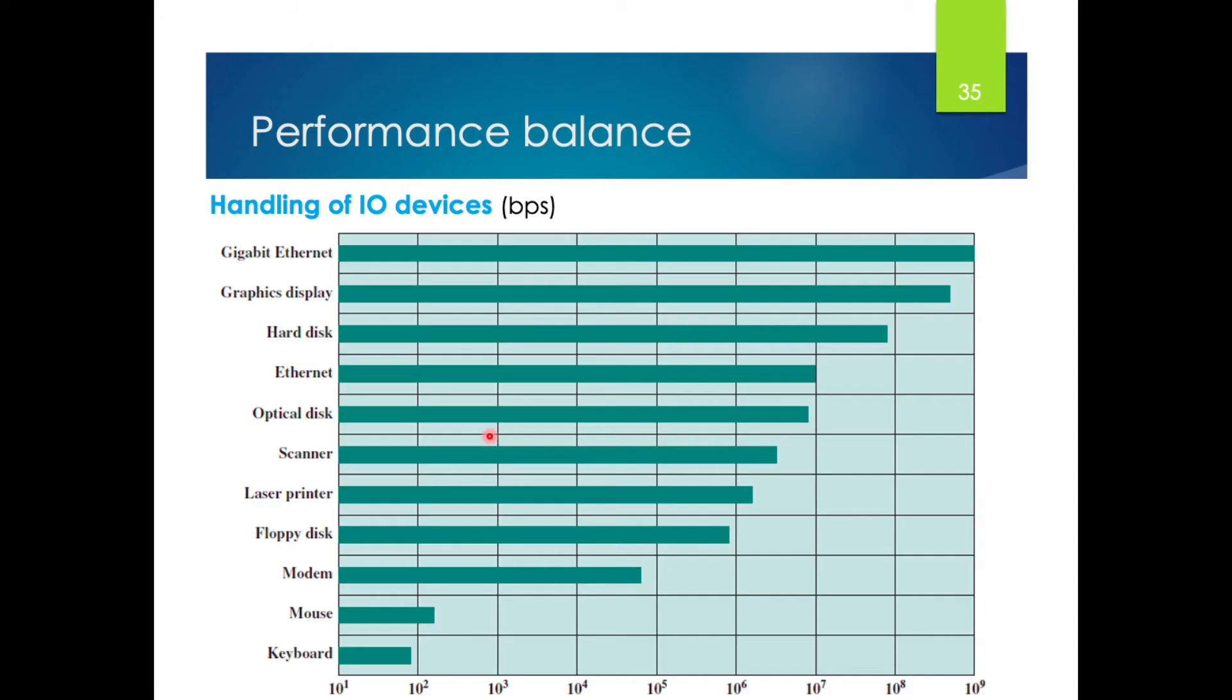Now we come to the I/O. Another area of design focus is the handling of IO devices. As computers become faster and more capable, more sophisticated applications are developed that support the use of peripherals with intensive IO demands. Strategies here include caching and buffering schemes, plus the use of higher speed interconnection bus and more elaborate structures of bus. In addition, the use of multiple processor configurations can act in satisfying IO demands.